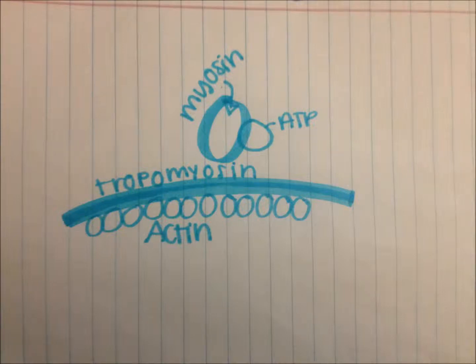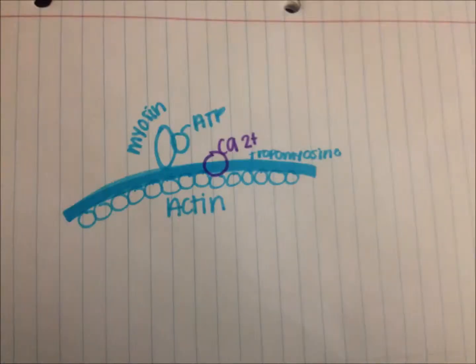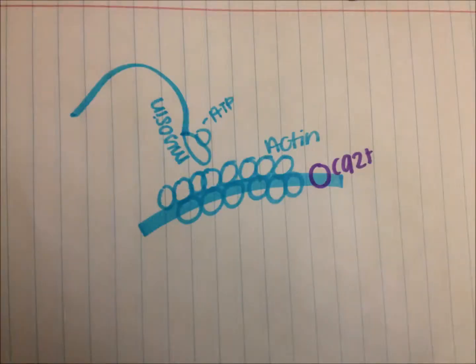He has them distract tropomyosin while he goes and gains access to actin. Once calcium comes into play, myosin can break away and start gaining access to actin. Once they're connected, it's like she's been kidnapped — myosin grabs onto actin.